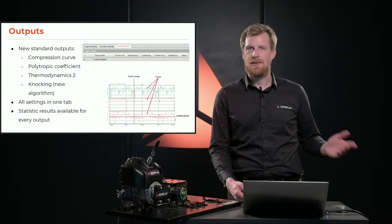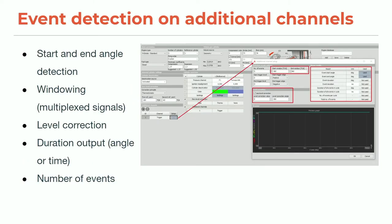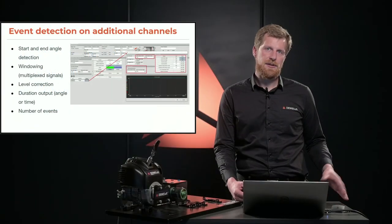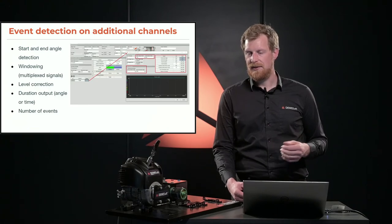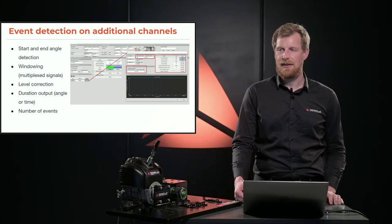We output instantaneous results, running averages, overall average, cylinder current values, and cylinder averages. A new feature in the upcoming release is event detection on additional channels. Before, each cylinder could have one angle detection event — usually for detecting the start angle of injection or ignition. Now this is changed to additional channels, so you can add separate channels for one spark plug, a second spark plug, and the injector. You can then detect starting and ending angles based on voltages. A really nice new feature is multiplexing: instead of needing eight inputs for eight injectors, you can use a single input with all eight cables through one current clamp, adding all signals together, then use windowing to only look for each signal in the angle range where it's expected.